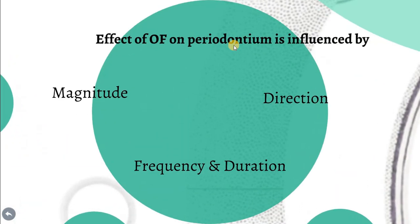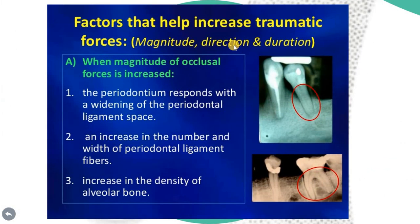The effect of occlusal force on the periodontium is influenced by the magnitude, mass, direction, frequency, and duration of the force. Regarding magnitude, increasing the magnitude causes the periodontium to respond by widening of the periodontal ligament space, increasing in the number and thickening of periodontal ligament fibers, and increasing in the density of the periodontal ligament in response to increased traumatic forces.